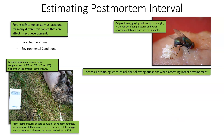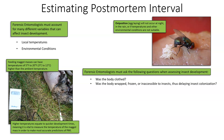Forensic entomologists must ask several questions when assessing insect development, as these will greatly impact the speed at which insects are developing. The first question: was the body clothed? If the body was clothed, it's obviously harder for insects to colonize the body, which can impact insect development. Was the body wrapped, frozen, or inaccessible to insects, thus delaying insect colonization? If insects cannot get to the body or if the body is frozen, they're not going to colonize it because they physically can't eat it.